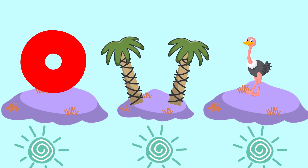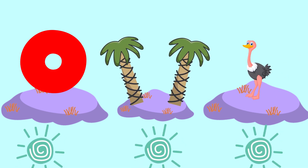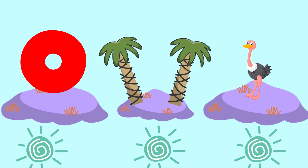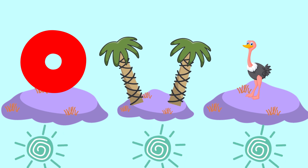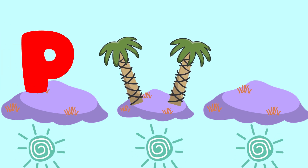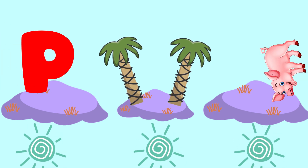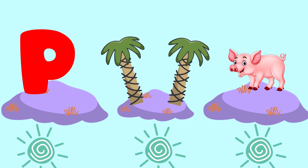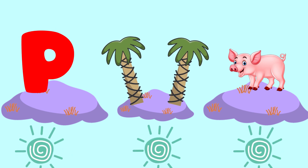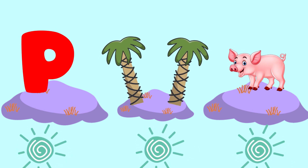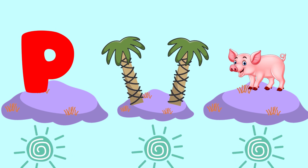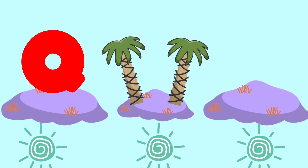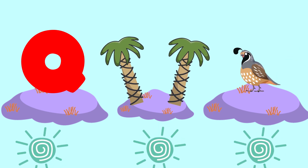Newt. O is for Ostrich. O. Ostrich. O. Ostrich. O. Ostrich. P is for Pig. P. Pig. P. P. Pig. P.